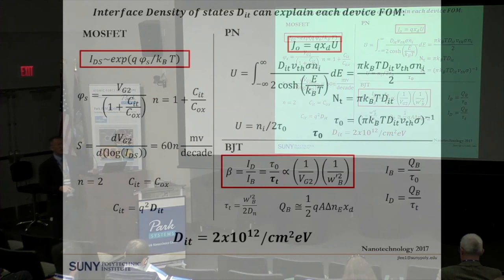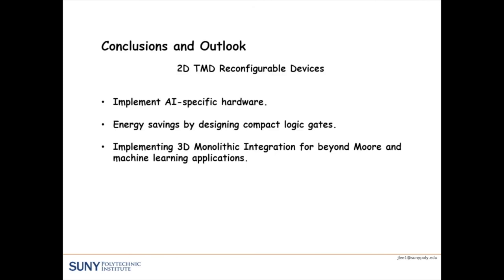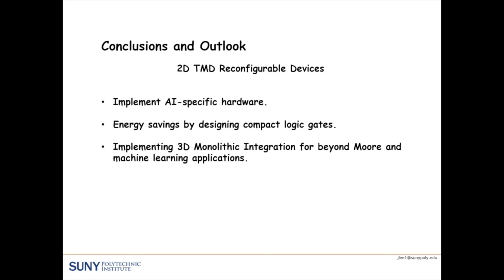To conclude: we made this reconfigurable 2D material device that can dynamically implement PN diode, MOSFET, and BJT functions. We're using it for machine learning applications to enable more efficient computing. The compact reconfigurable logic should enable more energy-efficient computing, and implementing it in a 3D monolithic fashion addresses beyond-Moore applications and leads to more efficient machine learning.